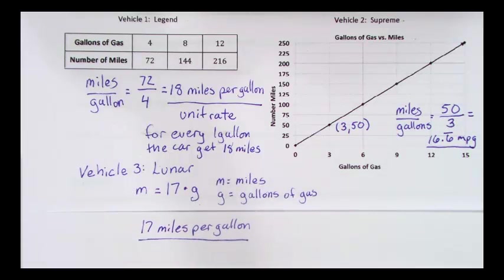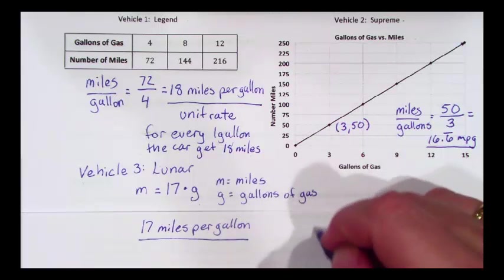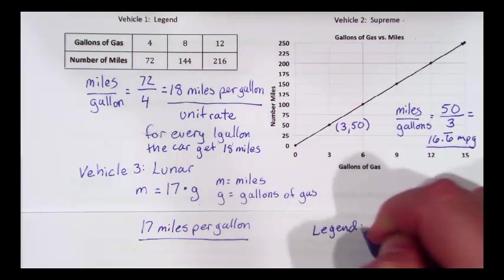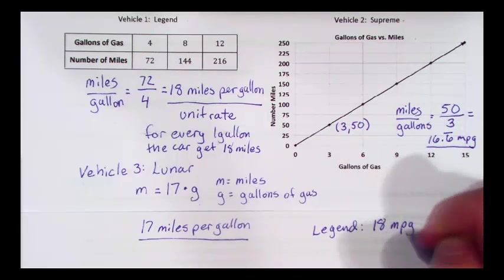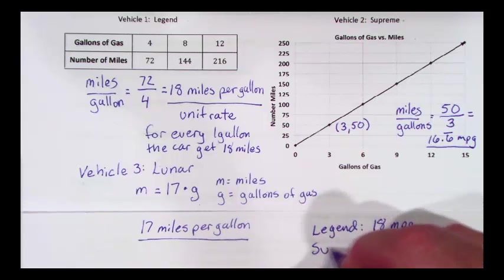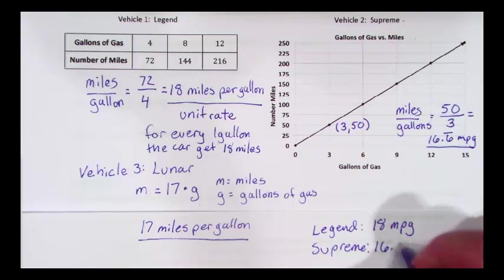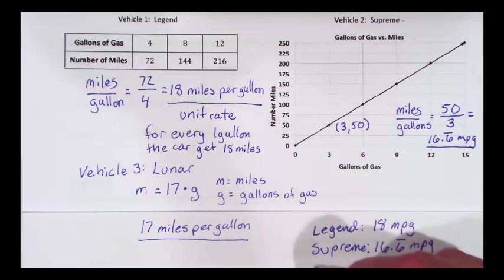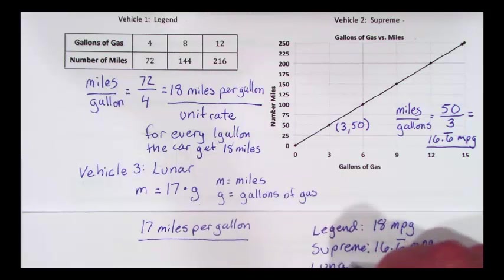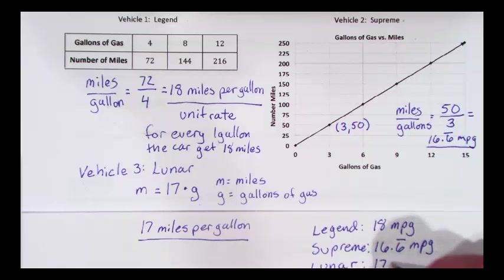So all of these I can now compare. I can look at the Legend, and I can see that it gets eighteen miles per gallon. I can look at the Supreme, and it gets sixteen point six repeating, which is about two thirds miles per gallon, and I can look at the Lunar, and I can see that it gets seventeen miles per gallon.